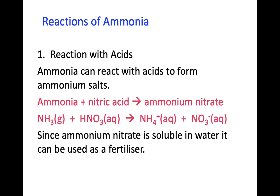Now that we know some of the properties of ammonia, let's look at some of the different reactions that ammonia can participate in. First and foremost, it can react with acids to form ammonium salts. If we were to react ammonia with nitric acid, we would produce ammonium nitrate. Since ammonium nitrate is soluble in water, it can be used as a fertiliser. Remember, if you are unsure whether salts are soluble, you can check in your data booklet — there is a table of salts telling you whether they are soluble, very soluble, or insoluble.